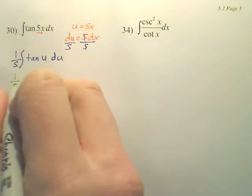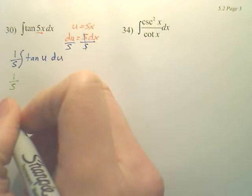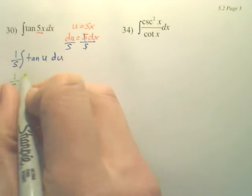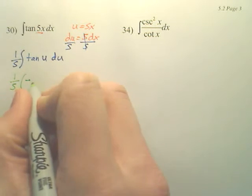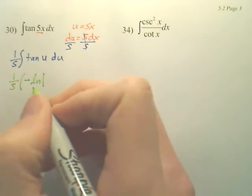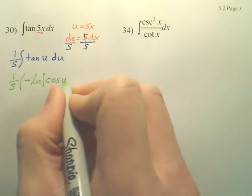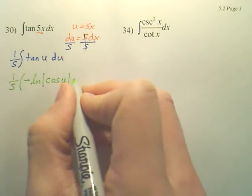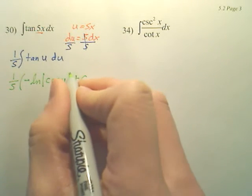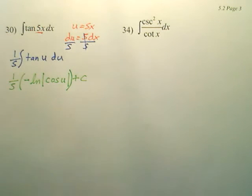So you just have 1/5. And the integral of tangent, when you look at your chart, I can't talk, is negative ln cosine u plus c. That's just on your chart.